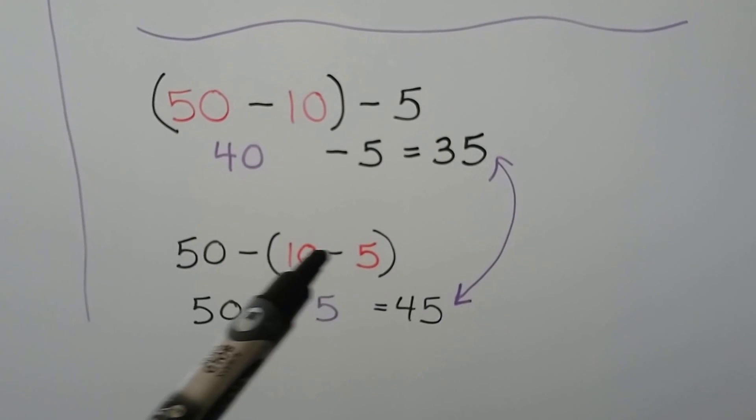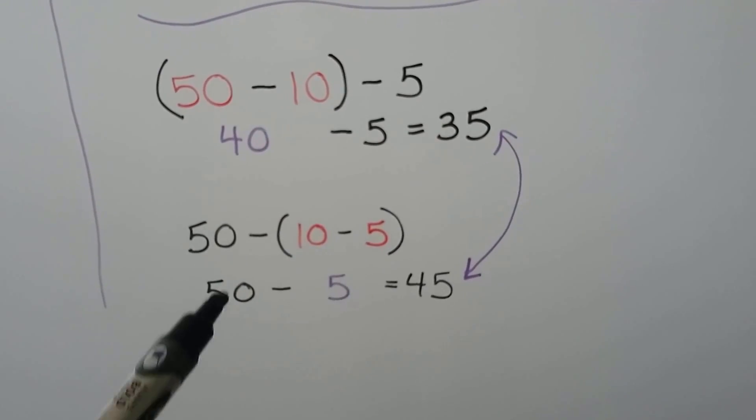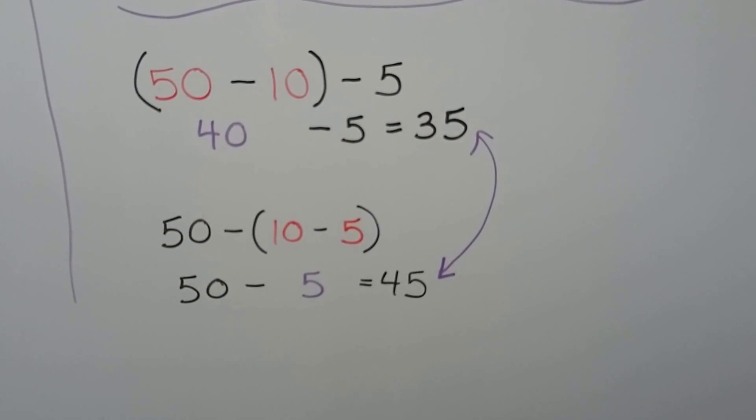If we change the grouping so that we subtract the 10 minus 5 first, that's going to give us a 5. Then when we do 50 minus 5, we're going to get a 45. Completely different answer.